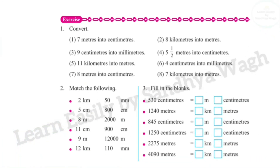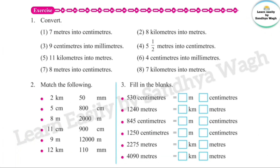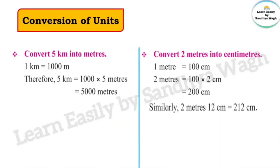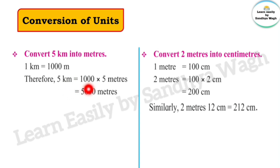In today's video we will solve the next exercise given on page number 64. But before that, we will understand conversion of units. Convert 5 kilometers into meters. We know that 1 kilometer is equal to 1000 meters. Therefore, 5 kilometers is equal to 1000 multiplied by 5 meters.